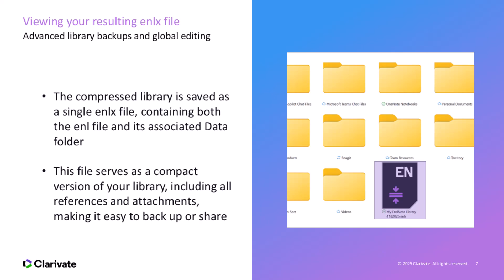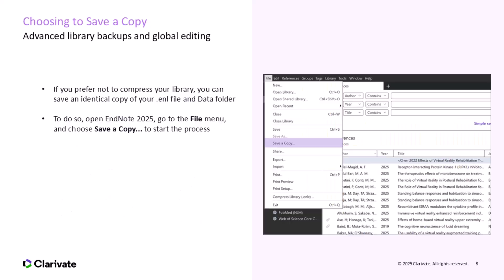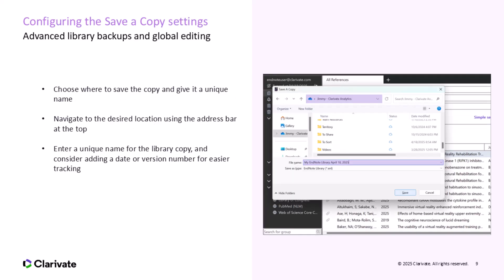If you prefer not to compress your library into a single file, you can simply save an identical copy of your library's .enl file and its data folder. This option keeps everything in its original format. To begin, open your EndNote library, then go to the File menu and select Save a Copy. This allows you to create a duplicate of your library without compression, and you'll end up with an exact copy of your library that can be stored in a different location or used for backup purposes.